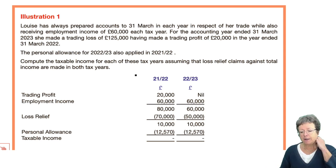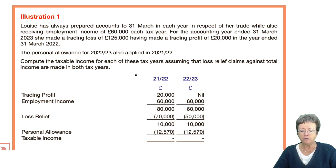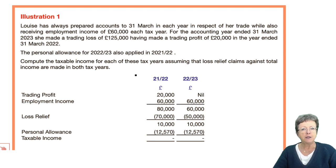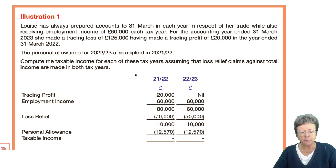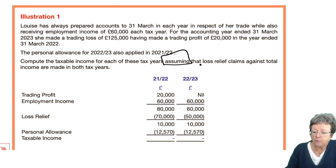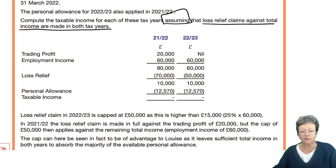Louise has always prepared accounts to the 31st of March each year in respect of her trade, while she also receives employment income of £60,000 a year. For the accounting year to March 2023, she made a trade loss of £125,000, having made a profit in the previous year to March 2022. Personal allowances apply in both years. We are to compute the taxable income for each tax year assuming loss relief claims against total income are made in both tax years.